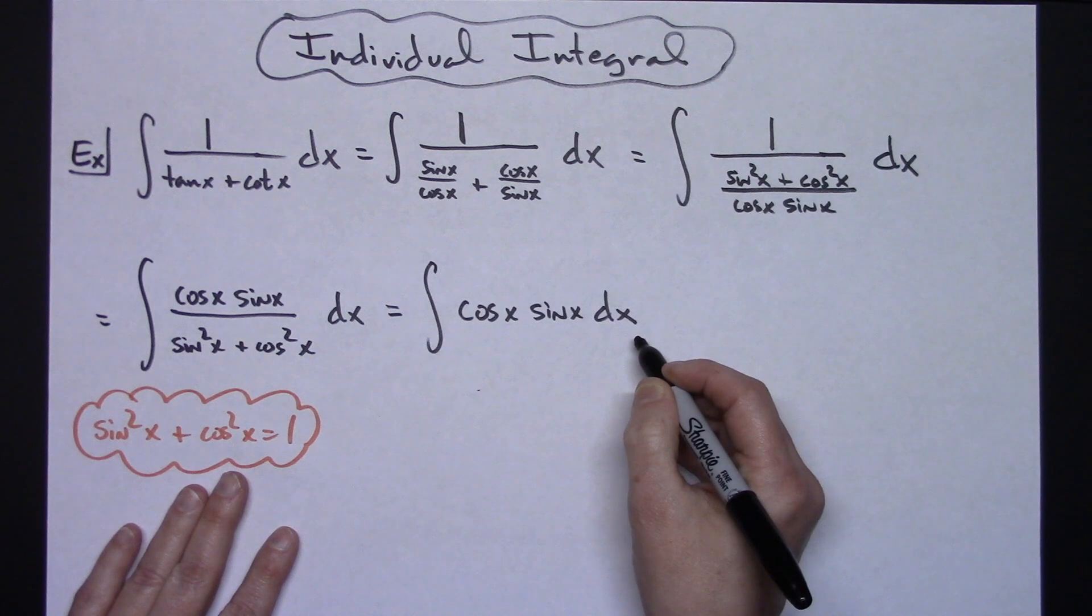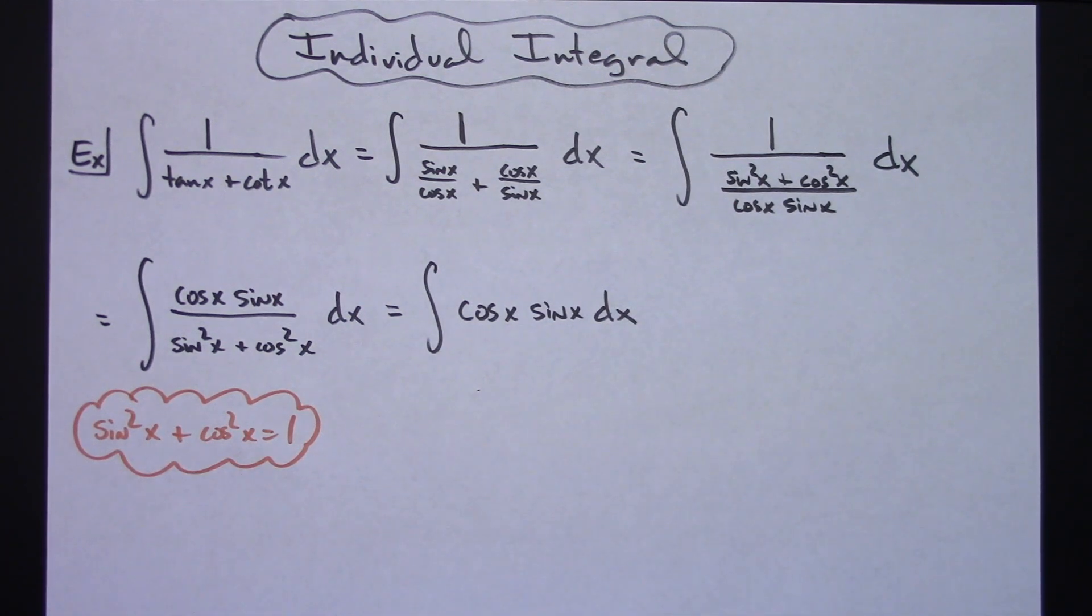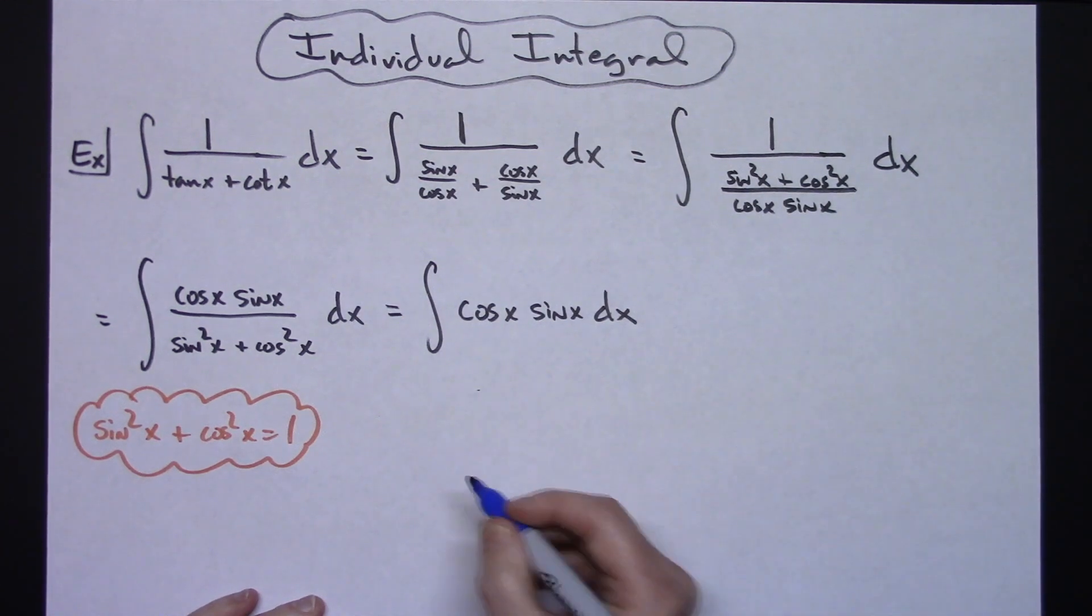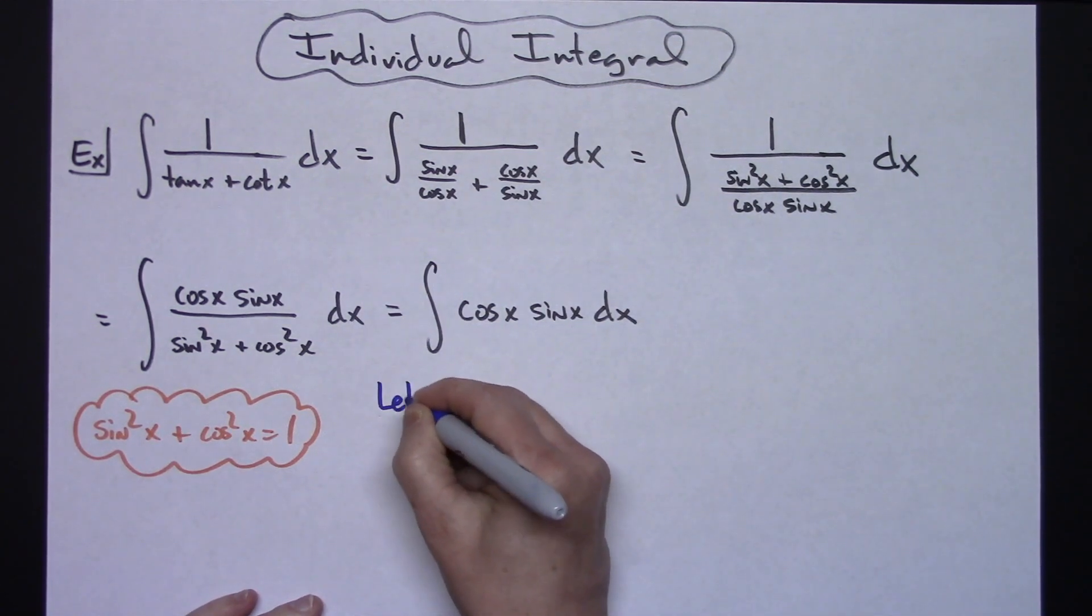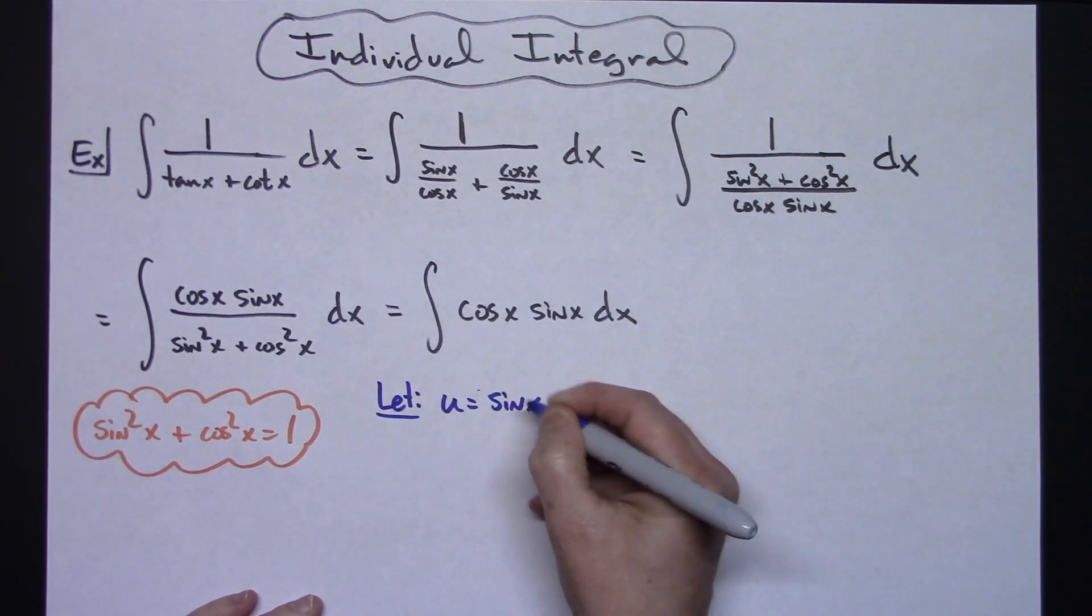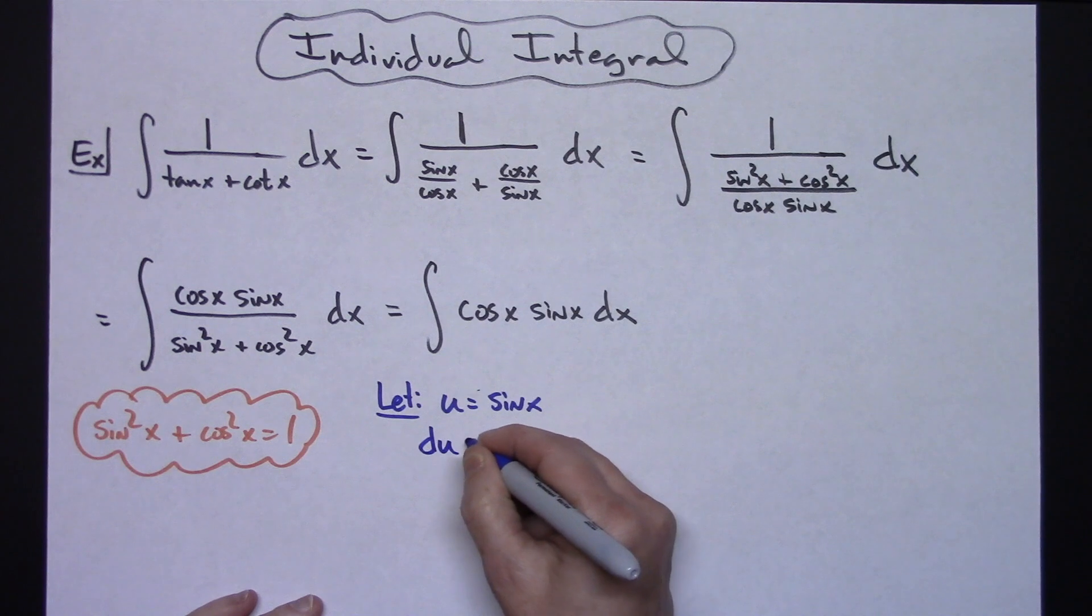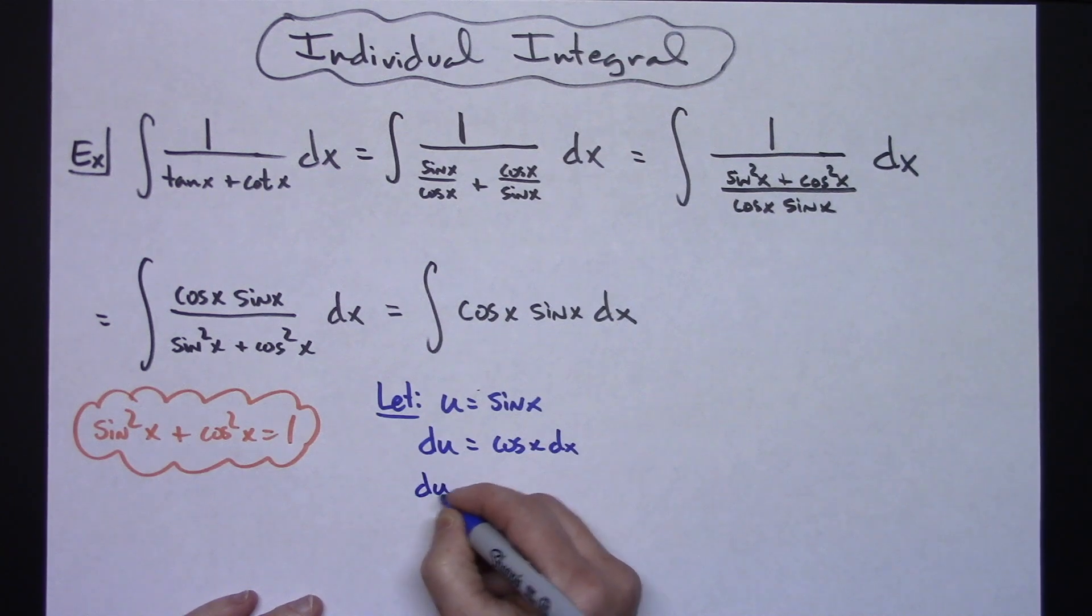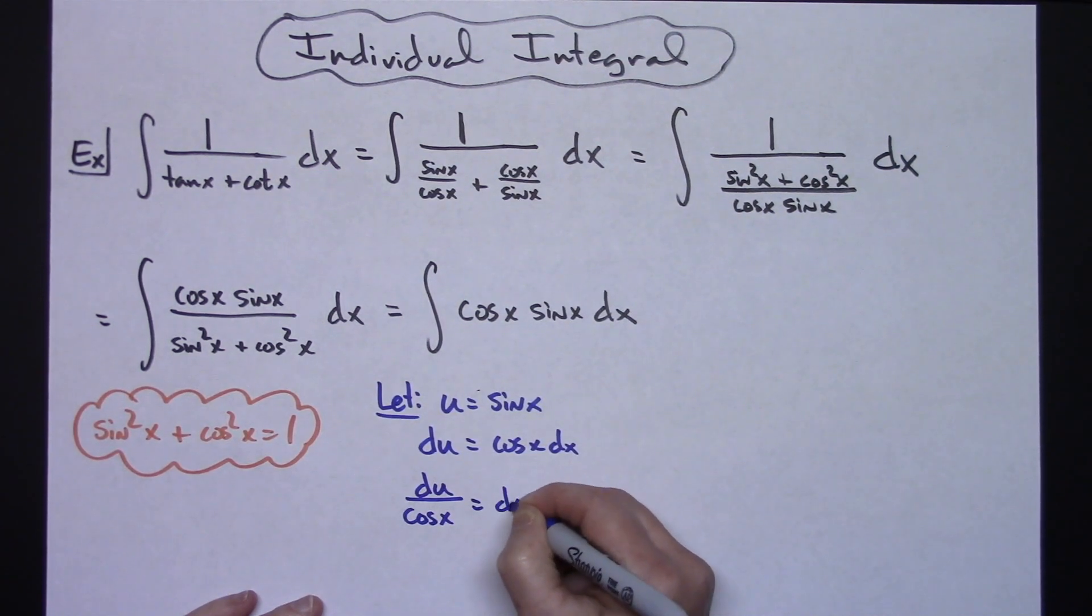So we are now finally to a place where this becomes a straight nice little u substitution because my derivative of sine is going to be cosine so it's going to cross out really nice. So we're going to let u equal sine x. Taking the derivative of both sides, du is going to be cosine x dx. Going ahead and solving for dx, we'll have du over cosine x equaling our dx.